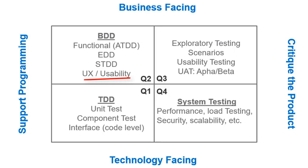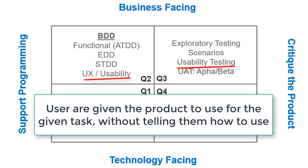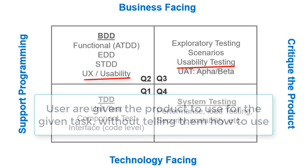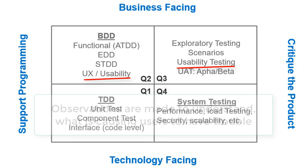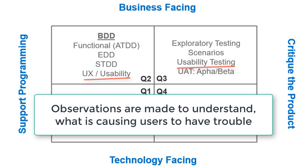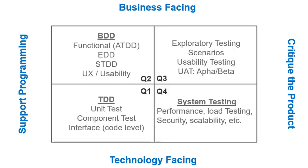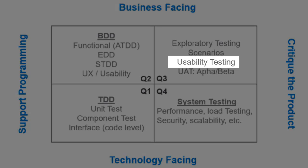What is usability testing, and why is it present in both Q2 and Q3 quadrants? In user experience or usability testing, users are given the product to use for a task without being told how to use it. For example, the task can be to browse the product offering and purchase an item, where the given product is an e-commerce website under development. Observations are then made to understand what is causing users trouble, and these insights help validate what is working and determine how to improve the design.